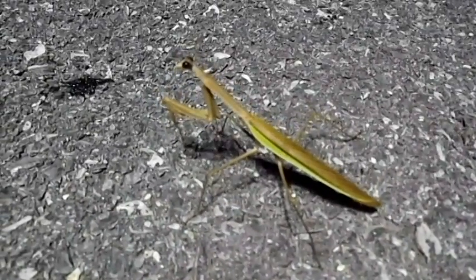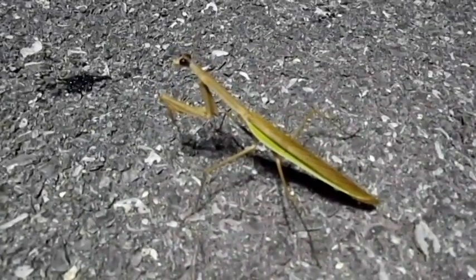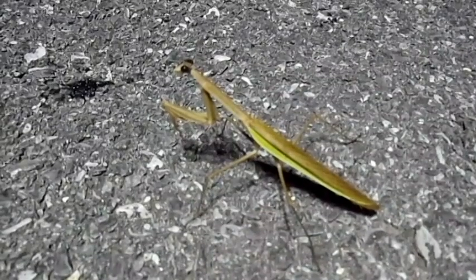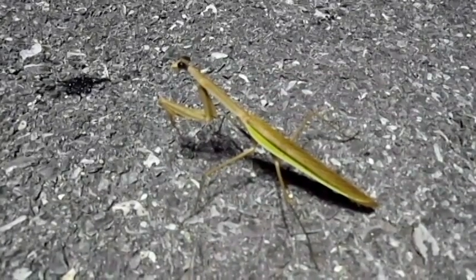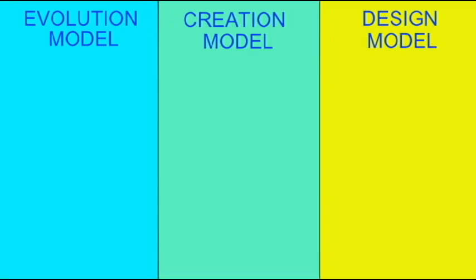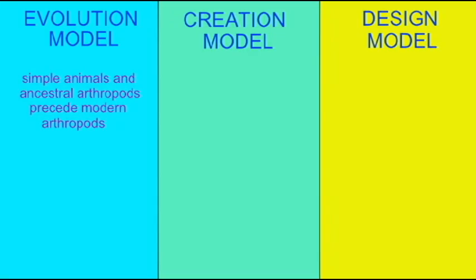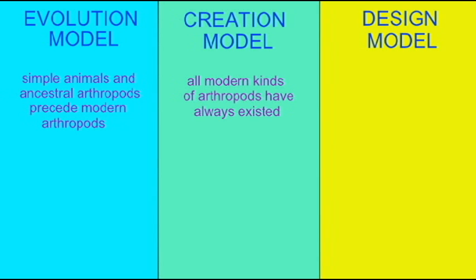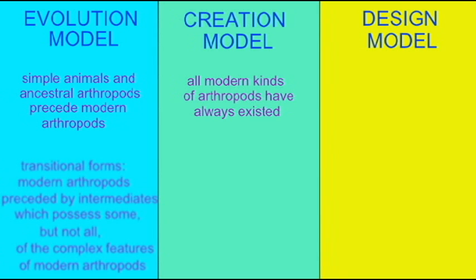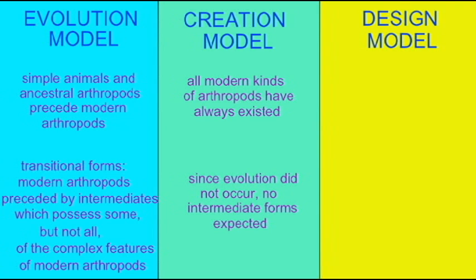If design is true, then there should be no fossils of transitional forms—animals which have some, but not all, of the features of arthropods—and no primitive arthropods which have some, but not all, of the features of the modern groups. So if one looks at early rock layers, if the design model is true, these transitional forms and intermediate forms simply would not exist.